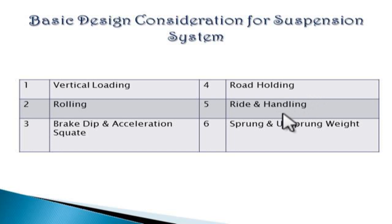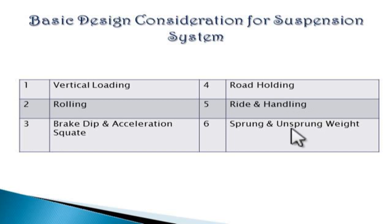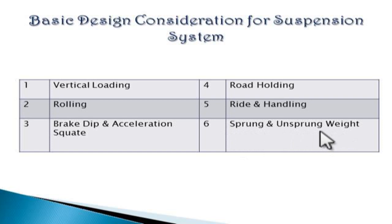The next consideration is ride and handling. Ride is the ability of the vehicle to provide a smooth, comfortable drive on a bumpy road, whereas handling is the ability of the vehicle to safely accelerate, brake, and corner. The final consideration is sprung and unsprung weight. Sprung weight is the weight supported by the vehicle's suspension system — it includes the frame, body, engine, and entire transmission system. Unsprung weight is the weight of vehicle components between the suspension and road surface, and it includes the axle assembly, wheels, tyres, brakes, etc.